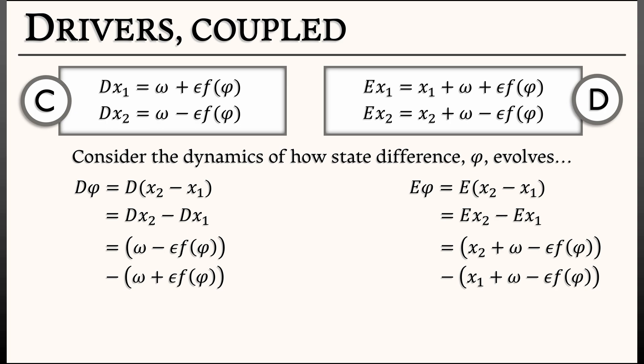And now, if I examine these right-hand sides, I see that there's some cancellation. In particular, these constants, these omega terms, they go away. In continuous time, I have reduced things to the system d phi equals minus 2 epsilon f of phi. That's a one-dimensional system. It only depends on phi.